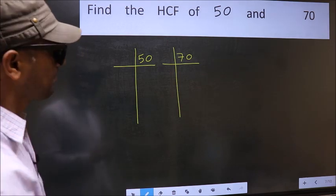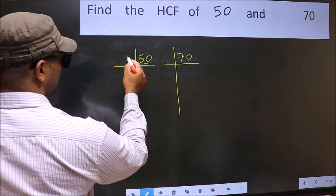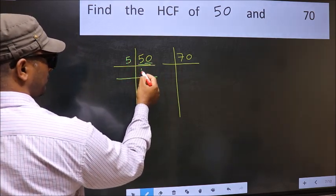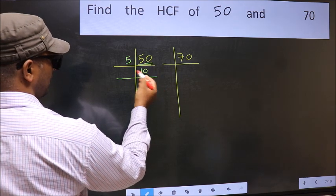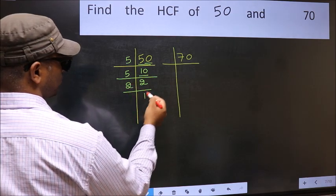Next, in this number, last digit is 0, so take 5. When do we get 50 in 5 table? 5 times 10 is 50. Now 10 is 5 times 2 is 10. 2 is a prime number, so 2 times 1 is 2.